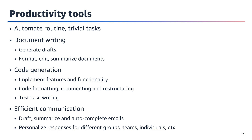Productivity tools powered by foundation models and large language models can significantly enhance efficiency across various tasks. These advanced AI systems excel at automating routine trivial activities, freeing up valuable time and mental resources for more complex endeavors. In the realm of document writing, these tools can generate initial drafts, format and edit documents, and provide concise summaries, streamlining the entire writing process.